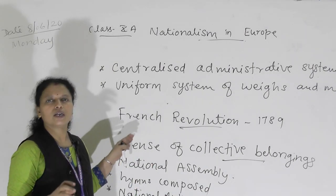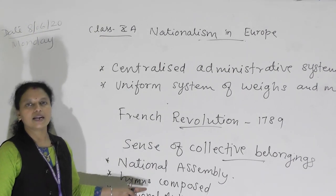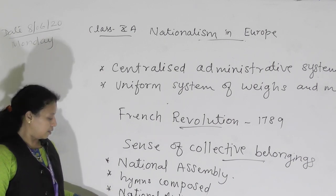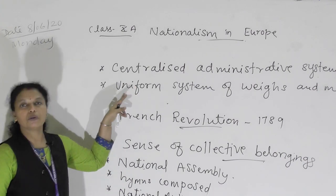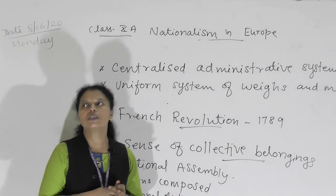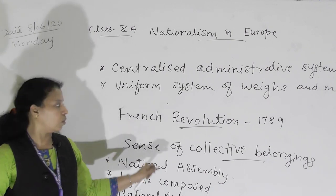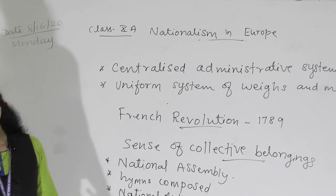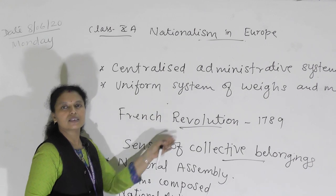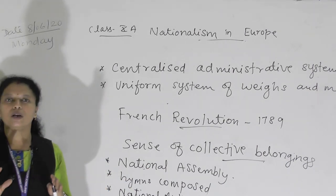So, the important steps taken by the French Revolutionaries to create a sense of collective belonging were: the National Assembly was formed from the estates general; hymns and a national anthem were created; martyrs were commemorated; a centralized administrative system was established; a uniform system of weights and measures was introduced; the tricolor French national flag was introduced; and French was accepted as the common language. By following this, a sense of collective belonging spread from France to other countries like Switzerland, Germany, and Italy.